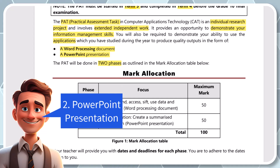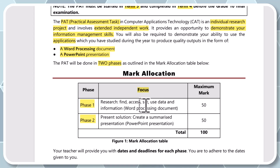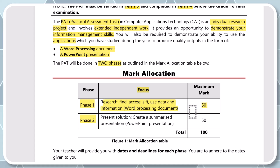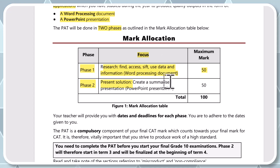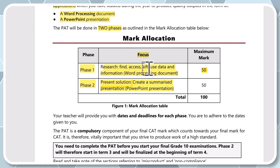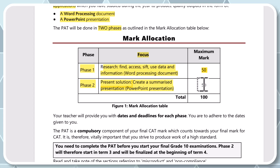In Phase 1, your focus is on researching, finding and accessing information — you're going to sift through data and process it in a Word document. The total for Phase 1 is 50 marks. For Phase 2, which will be in Term 4, you're going to present a solution to the topic, create summarized presentations. The information you researched in Phase 1 will be summarized in a PowerPoint presentation, guided by the PAT requirements. Phase 2 is also worth 50 marks.